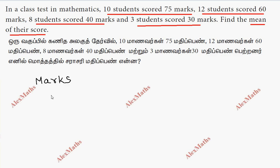Marks is one column. So what marks are there? 75. Here is the frequency. So 10 students scored 75, here is the frequency of 10.